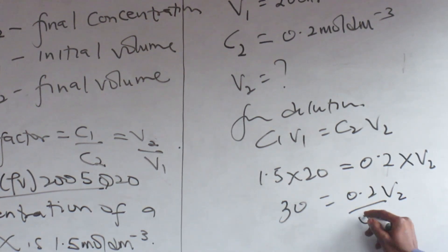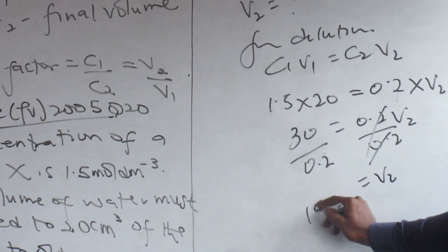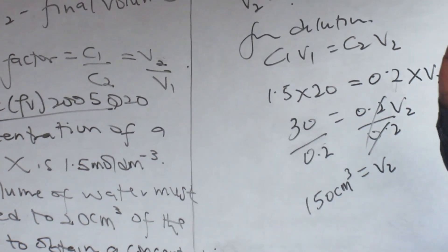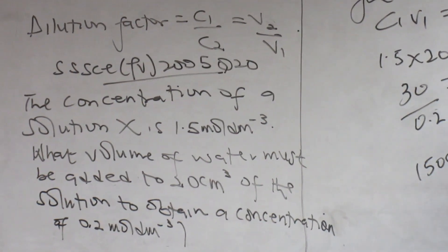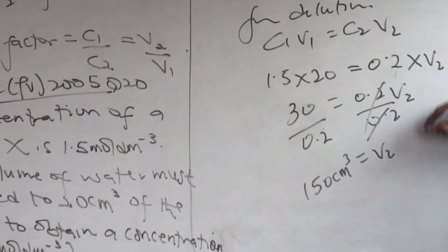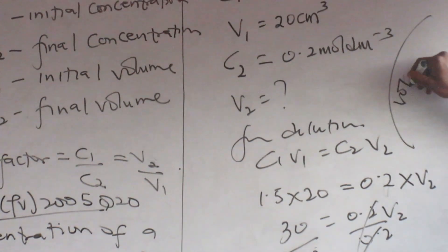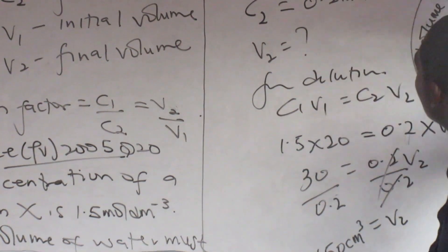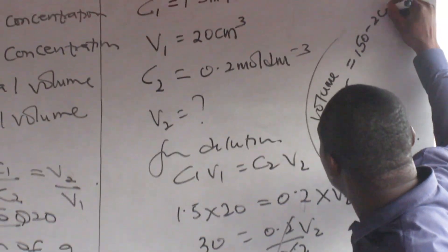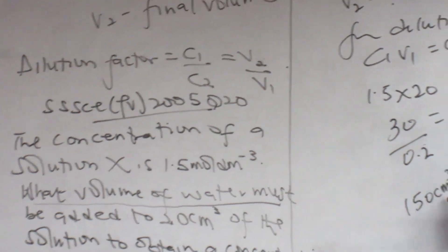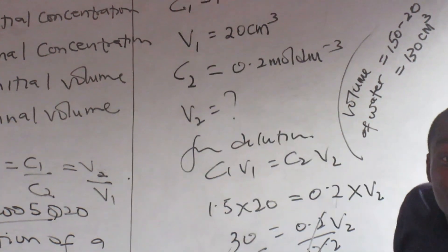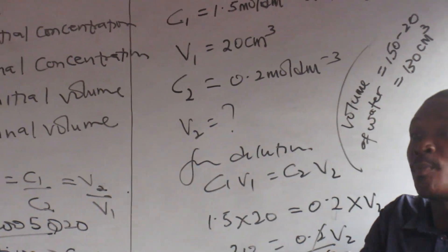What volume of water must be added to 20 cm³ of the solution to obtain a concentration of this? Then this should be C2. That's 0.2 mol per dm³. I have to look for V2 here. What volume of water must be added to this? So this is the V1 given. I want to look for V2.